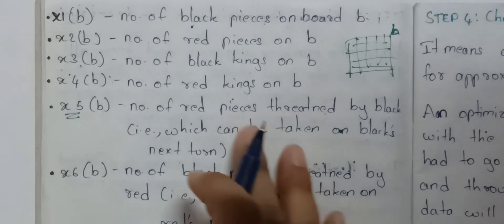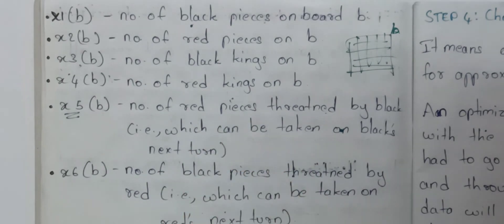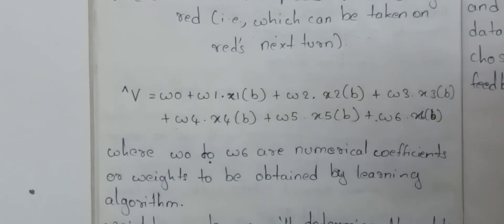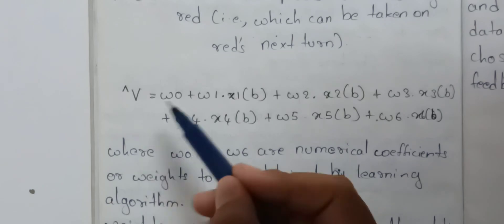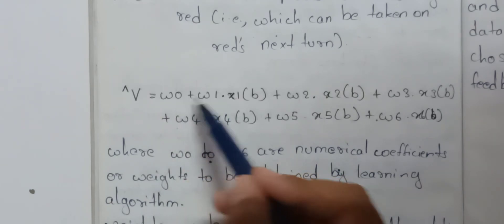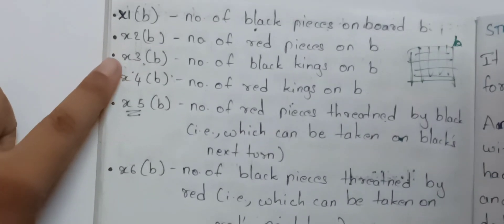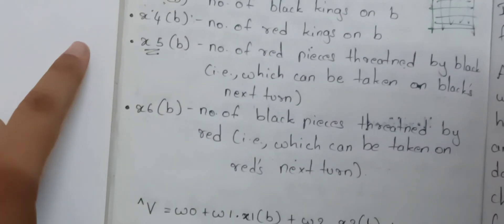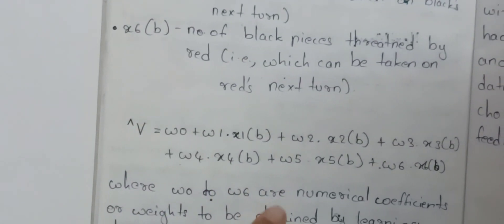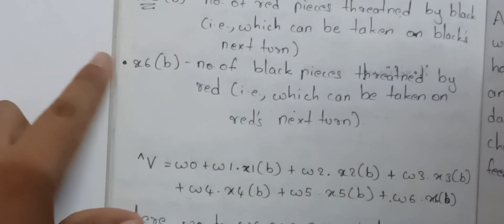Using these six features to represent the target function, the equation will be: V' = w0 + w1*X1 + w2*X2 + w3*X3 + w4*X4 + w5*X5 + w6*X6.